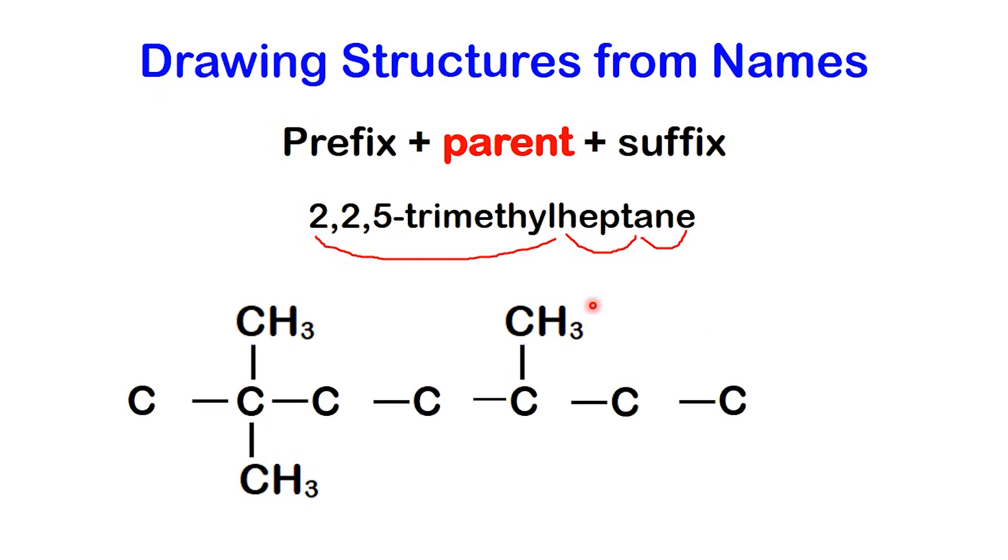The last step is simple but very important. Once the backbone and the substituents are in place, we complete the structure by adding hydrogens. Remember, each carbon atom must form four bonds in total. Let's go through it one by one.